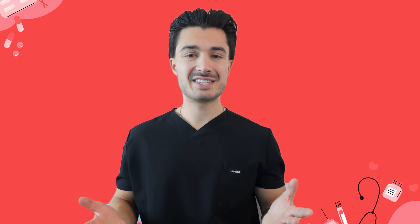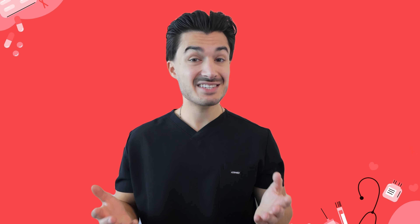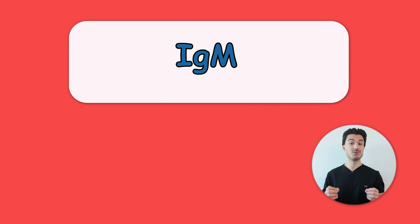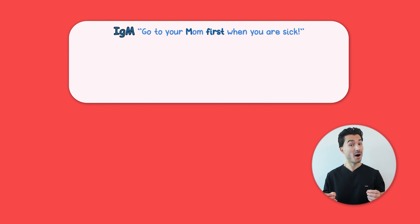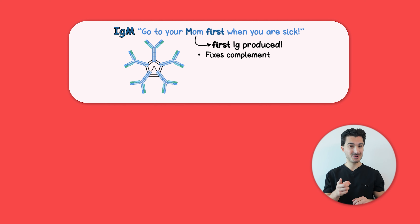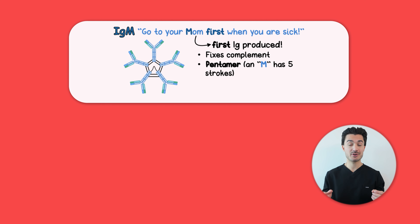Let's dive into the first immunoglobulin, which is also the first one produced in your primary immune response — and that is IgM. You're going to remember this because you go to your mom first when you're sick, so you'll never forget it's the first antibody produced. IgM also fixes complement and has a classic pentameric structure. You'll remember it because the letter M has five strokes.